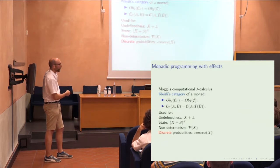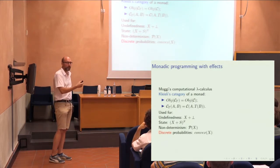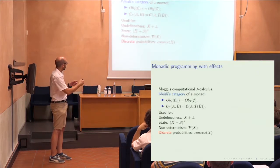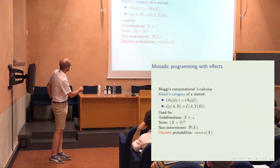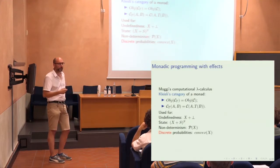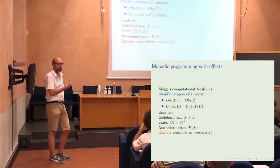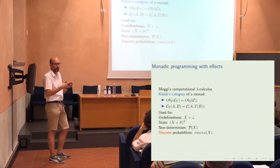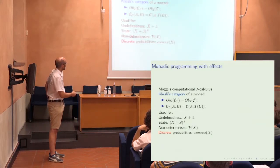You can do state — functional programming with states — and you have a type S for state, carried from one state to the other. You also have non-determinism. In a set-theoretic semantics you would take either the finite power set or the ordinary power set, which gives you non-deterministic computations, and the Kleisli category will actually be relations, or finite relations — relations with finite codomain.